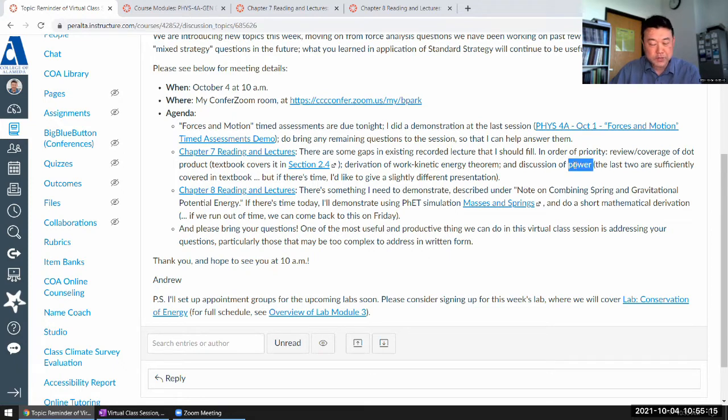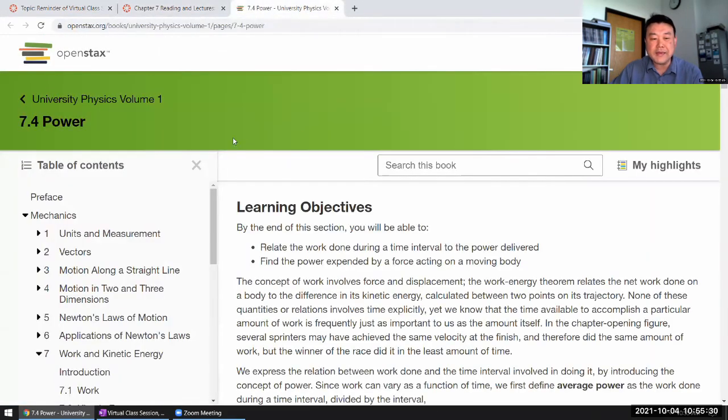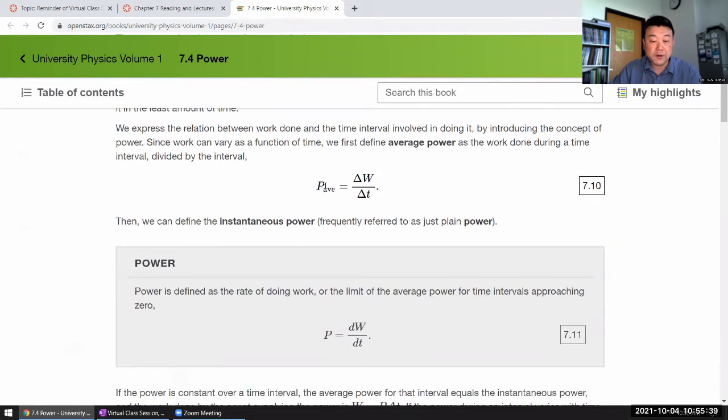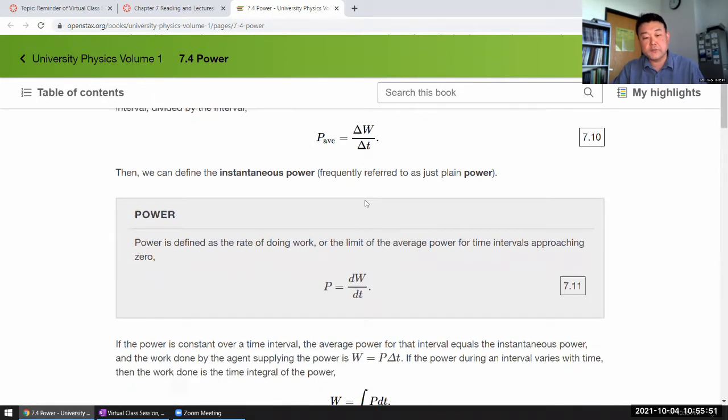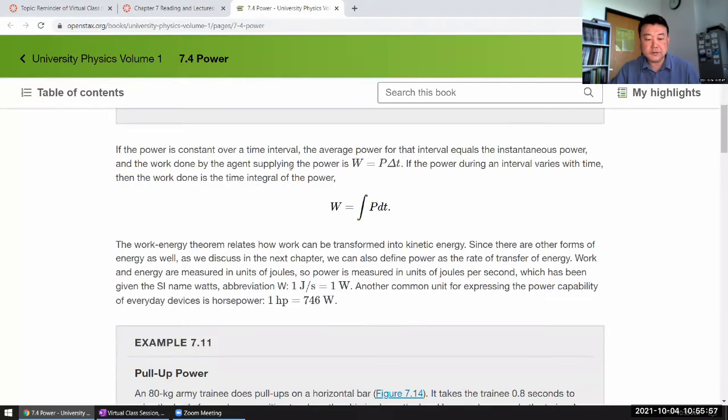So one is power, which we won't spend a lot of time with. It's in section 7.4, and the main thing you might have to know and remember in problem solving is the definition of power. Power is described as amount of work done or change in energy per time. So power is rate of energy change or rate of work being done. Either is interchangeable. That's basically it.